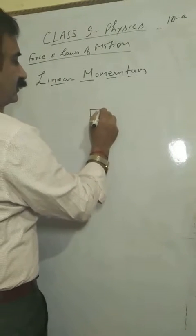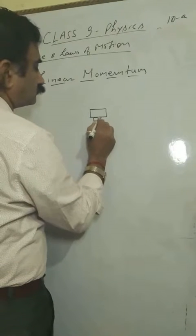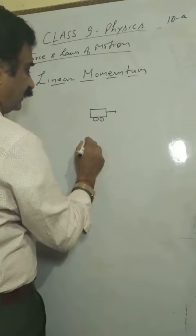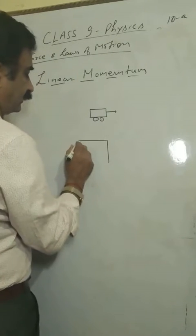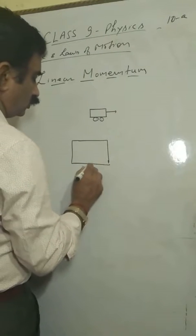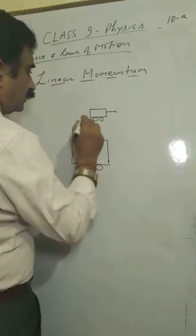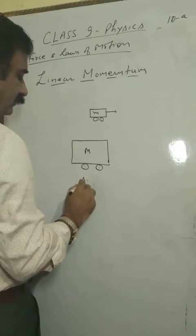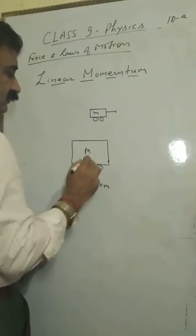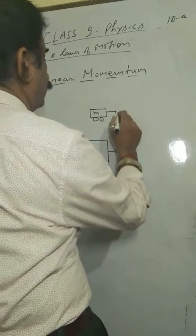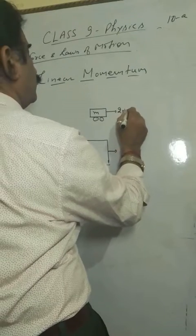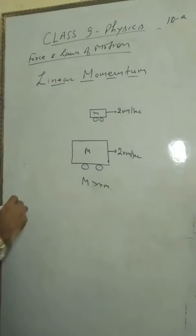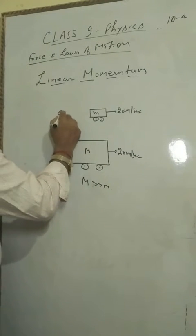Suppose you are having a small car which is moving in the right hand direction, and there another big truck you are having. Its mass is small and here, mass of that truck is much more than the car. But both the objects are moving with the same velocity, 20 meter per second.